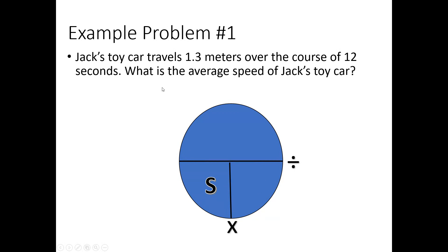So look at this example. Jack's toy car travels 1.3 meters over the course of 12 seconds. And if I want to know the average speed of Jack's car, since I'm looking for speed, I'm going to leave my S here. And then I know at the top, distance is going to go here. So I'm going to pull out that distance of 1.3 meters. And then I'm going to plug in my time, which they told me was 12 seconds. And since 1.3 is on top of 12 seconds, that means we have to divide the two. And when you do that, you get speed equals 0.11 meters per second.